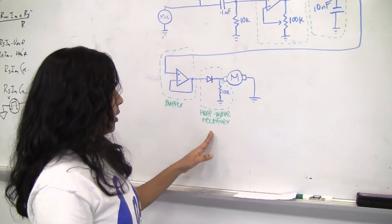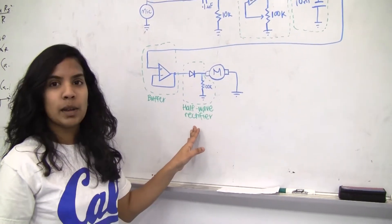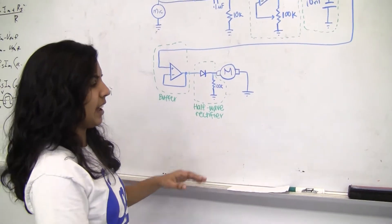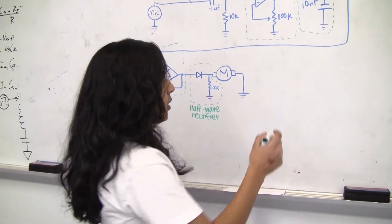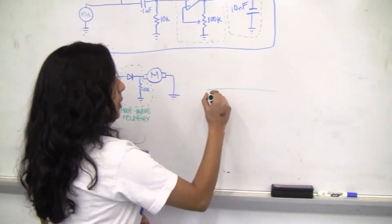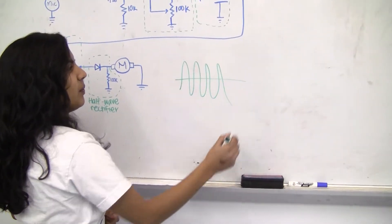Because what we were getting was a signal that had a lot of positive and negative voltages. If this is zero we were seeing something like this, and that's really really fast.